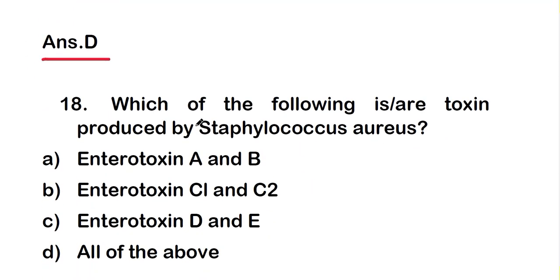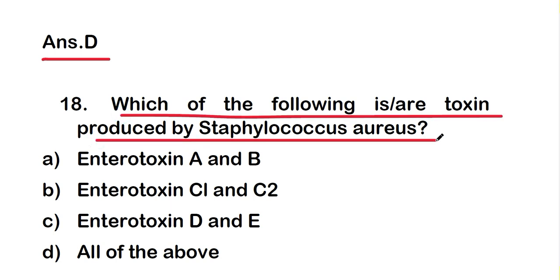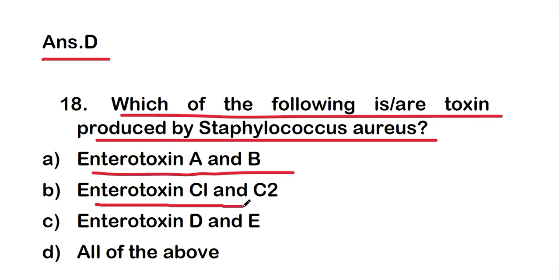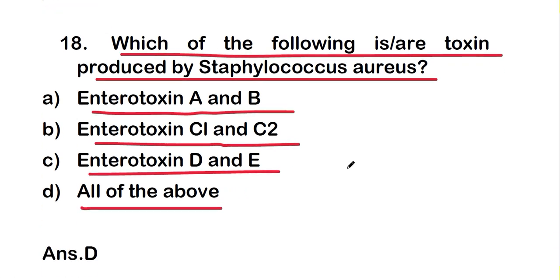Question 18: which of the following are toxins produced by Staphylococcus aureus? The options are enterotoxin A and B, enterotoxin C1 and C2, enterotoxin D and E, or all of the above. The right answer is option D — all of the above are correct toxins produced by Staphylococcus aureus.